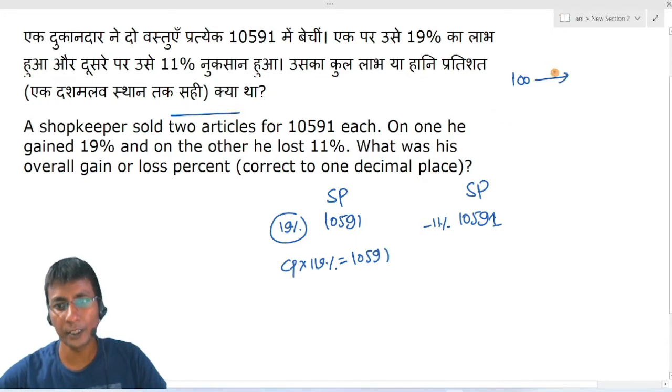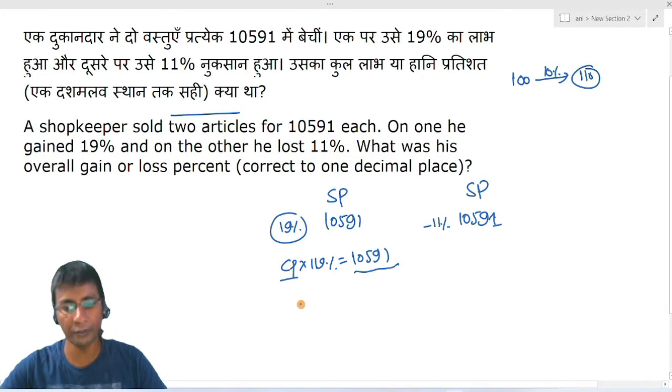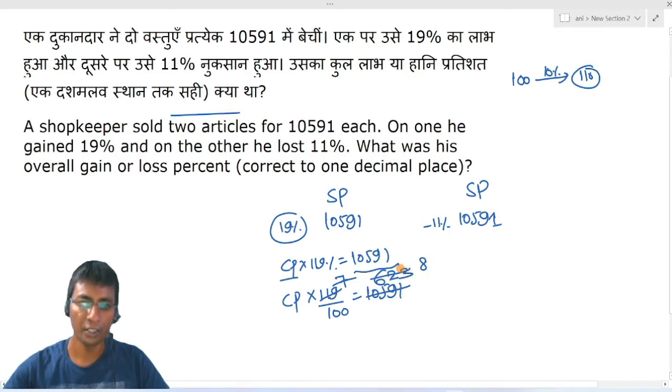So we divide 10591 by 119 and multiply by 100. Performing the division: 7, 17, 6, 2, 2, 34, 51, then 3, 7, 7 into 8 is 56, so 6, then 9. From here you get the cost price: 8, 9, 0, 0.